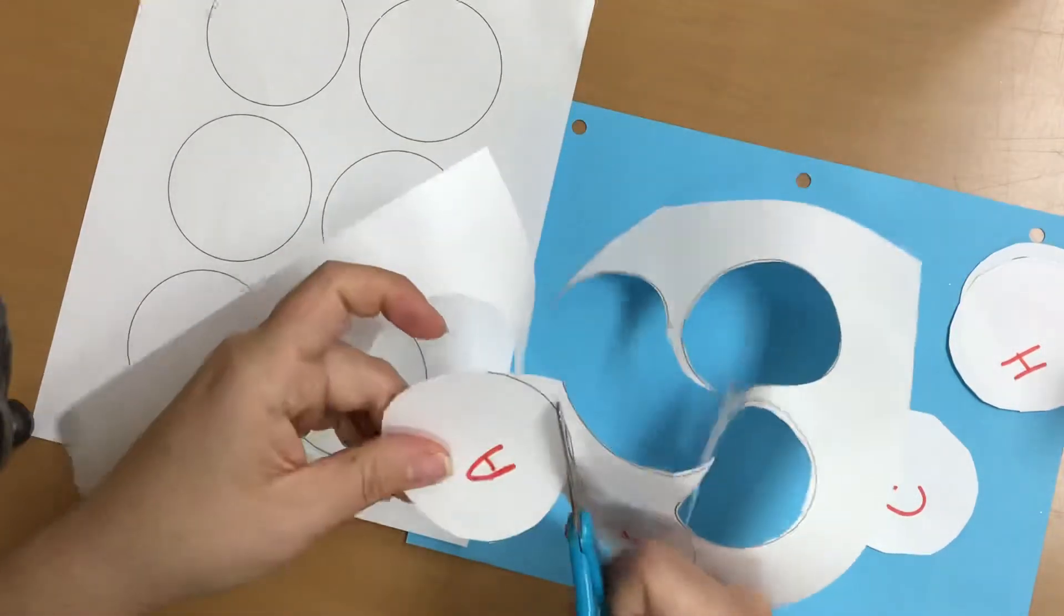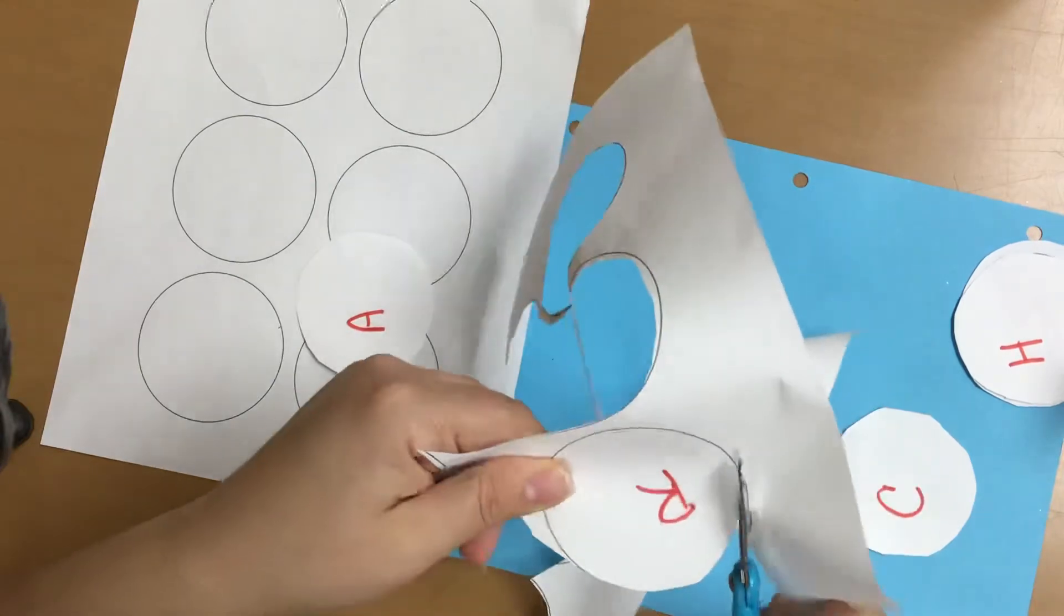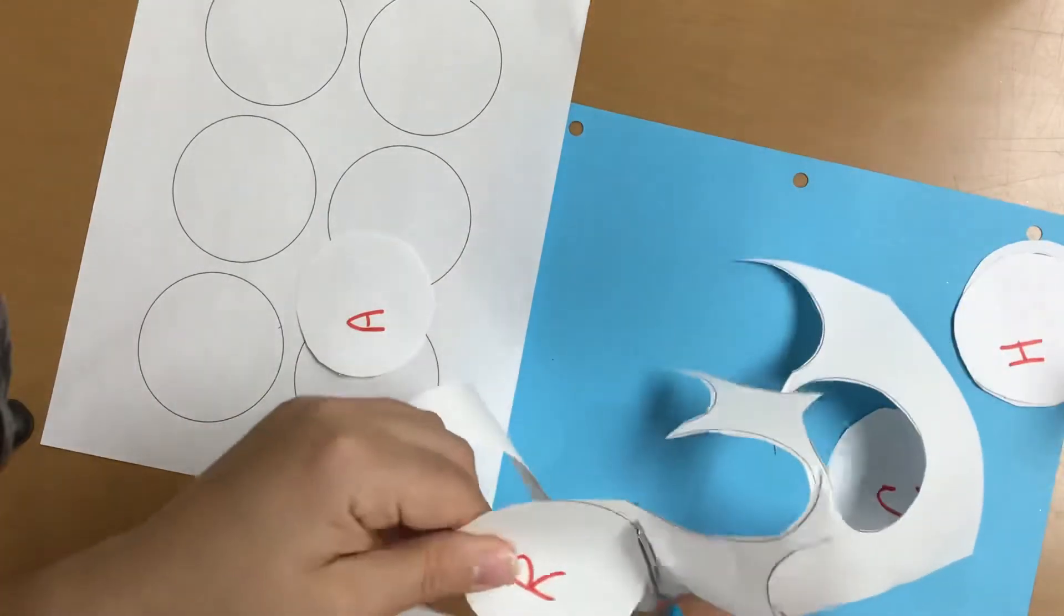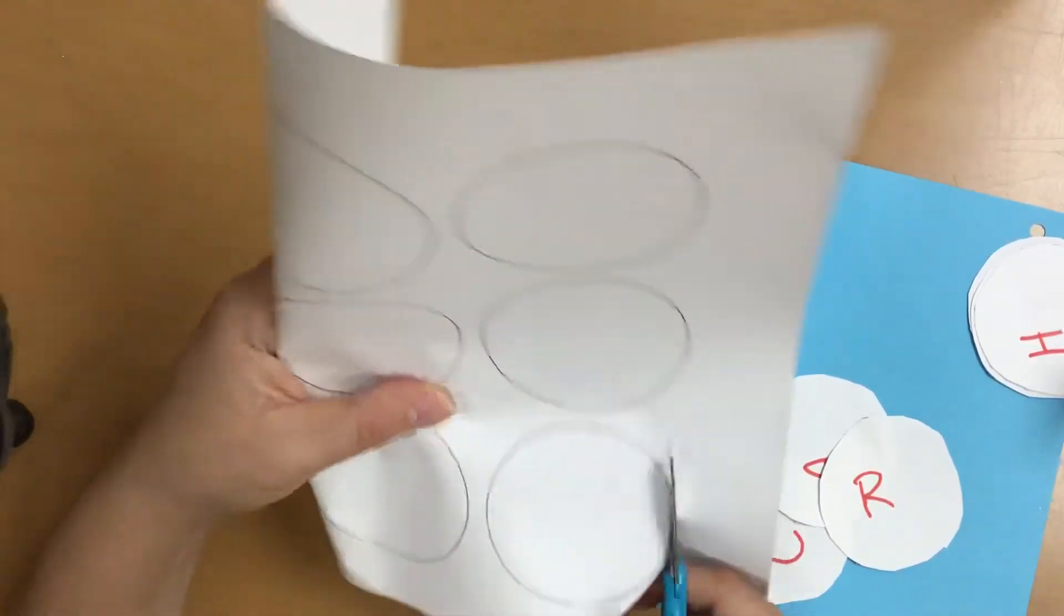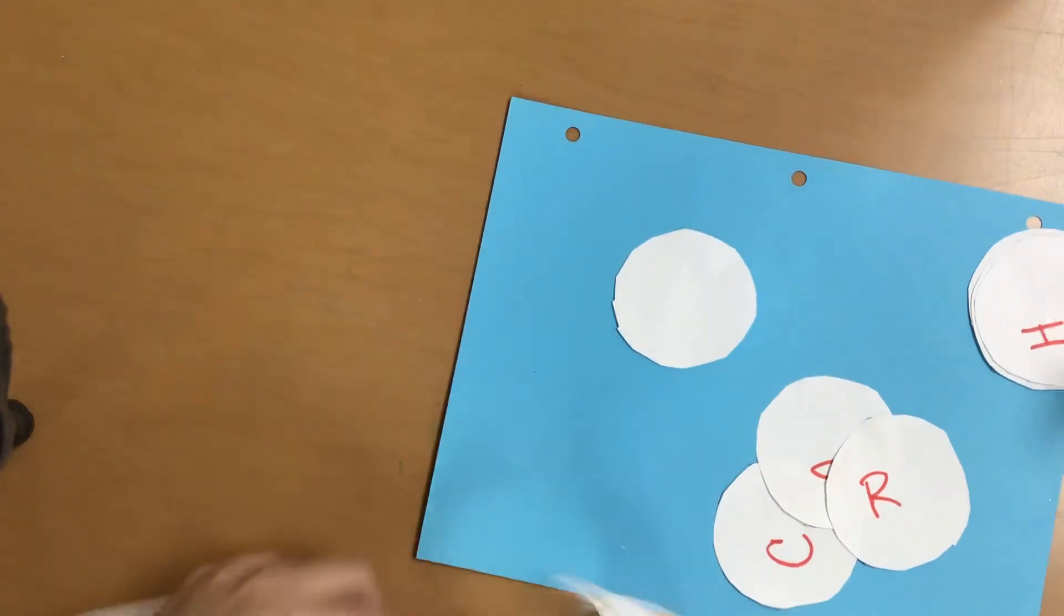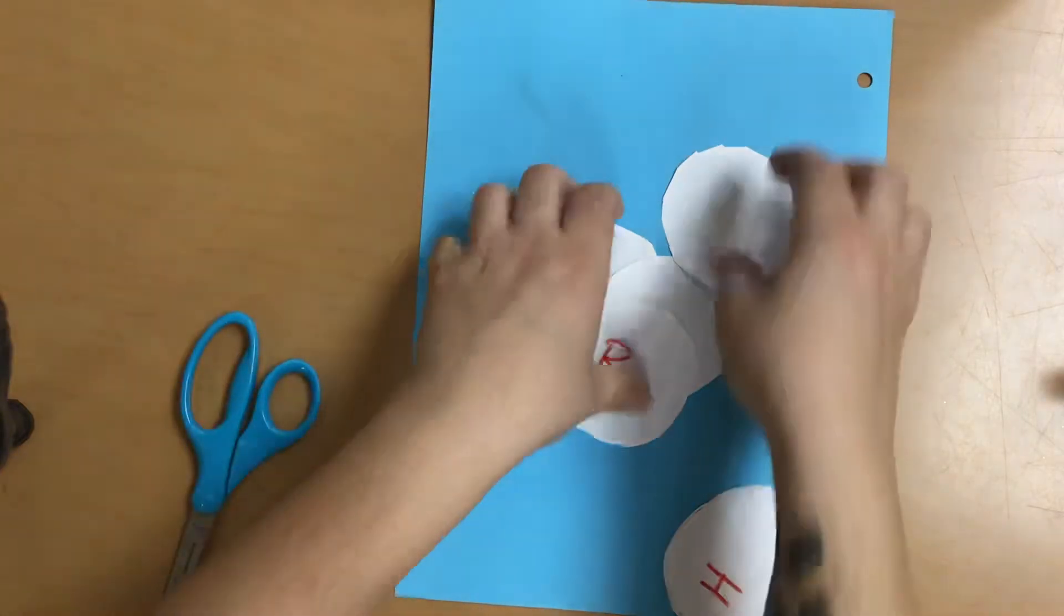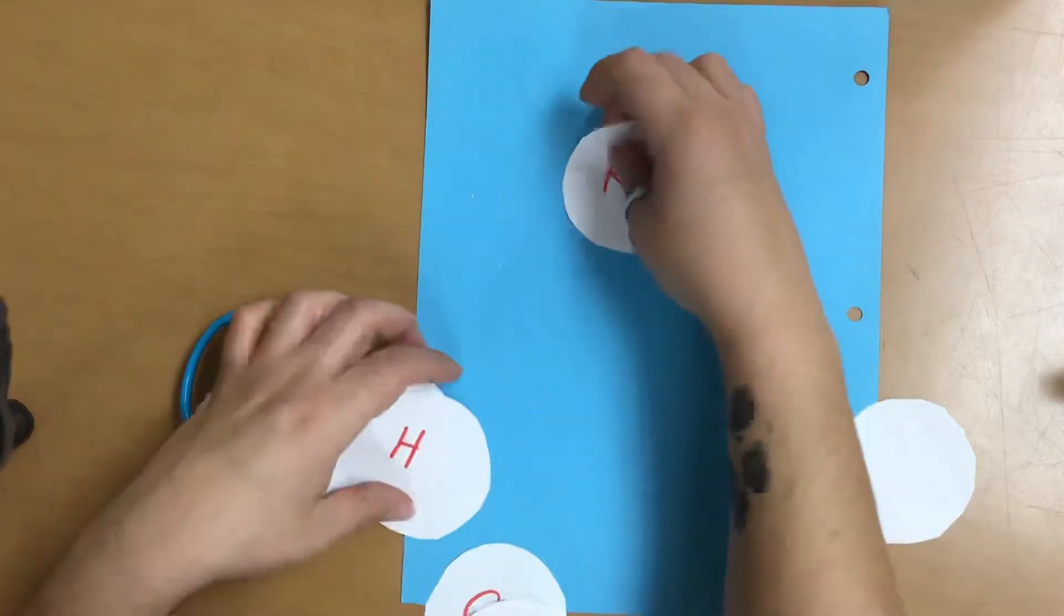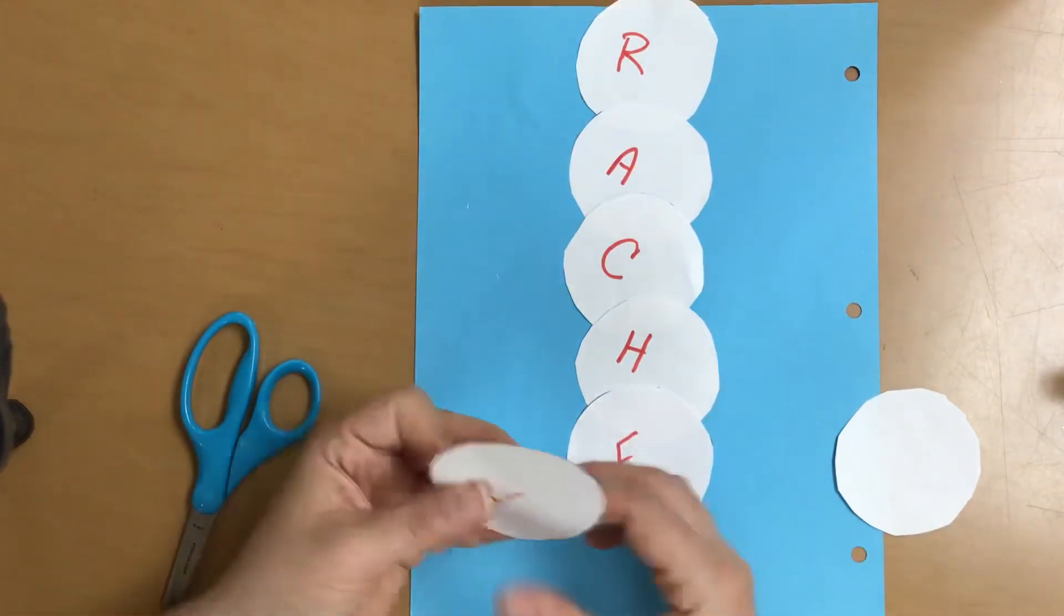All right. And then you're going to need at least one blank one. All right. So here's my letters. I'm going to cut out one more blank one. All right. So there's my circles that I have. So what you can do is I'm grabbing some markers here. You can take your piece of paper. Here's my paper. And if I wanted to spell my name, I could do R-A-C-H-E-L.